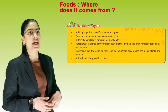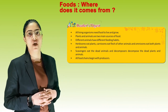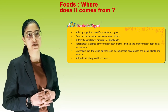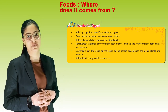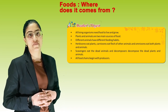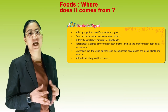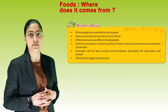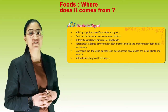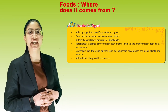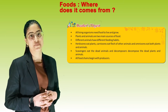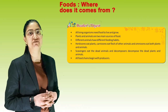Quick revision: All living organisms need food to live and grow. Plants and animals are two main sources of food. Different animals have different feeding habits. Herbivores eat plants, carnivores eat flesh of other animals, and omnivores eat both plants and animals. Scavengers eat dead animals, and decomposers decompose dead plants and animals. All food chains begin with producers.